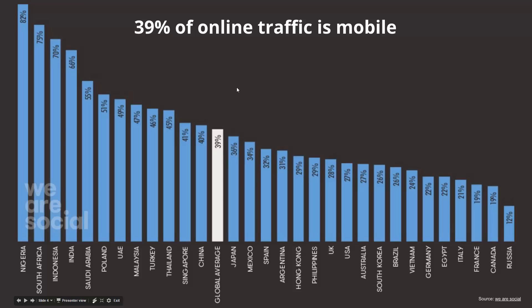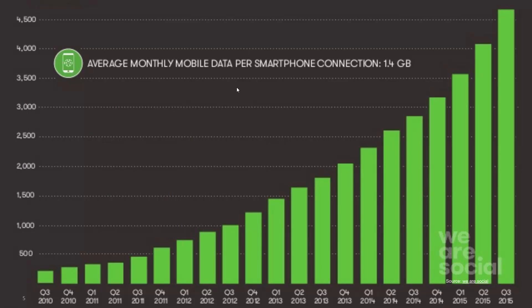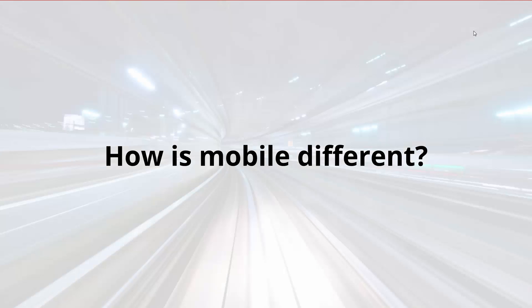Not only is a greater percentage of online traffic mobile, but when you look at the average person, they are now using more and more data. From 2010 all the way through 2015, you can see a constant increasing amount of data that each person is using through their smartphone. So people are using phones more and more, and those mobile devices are consuming more and more data all of the time.